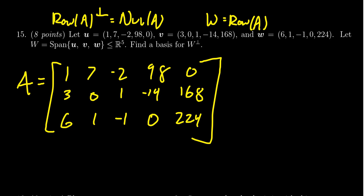Notice that the way we set this up, the row space of A here is going to equal the span of its rows, which would be u, v, and w. Therefore, that's equal to capital W. So we've created a matrix whose row space is equal to W.